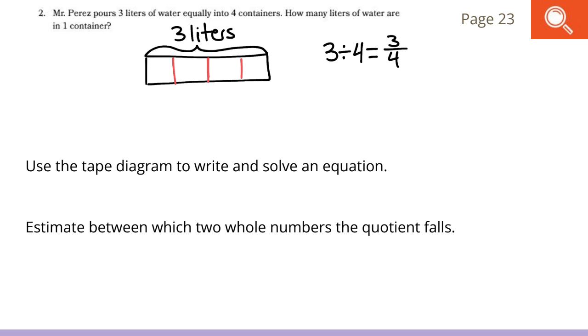Now, that second part, I kind of jumped the gun. I didn't estimate between which two whole numbers the quotient falls. But I know that if I don't have as many liters as containers, then I would be less than 1. Showing that another way, if I would have 4 liters of water divided by the 4 containers, that would give me 1 exactly. So, since I have less than 4 liters shown here, if I have 3, that means my quotient would be smaller than 1. Less than 1.